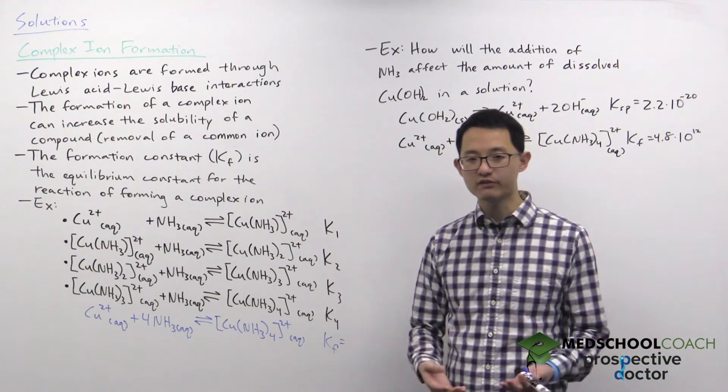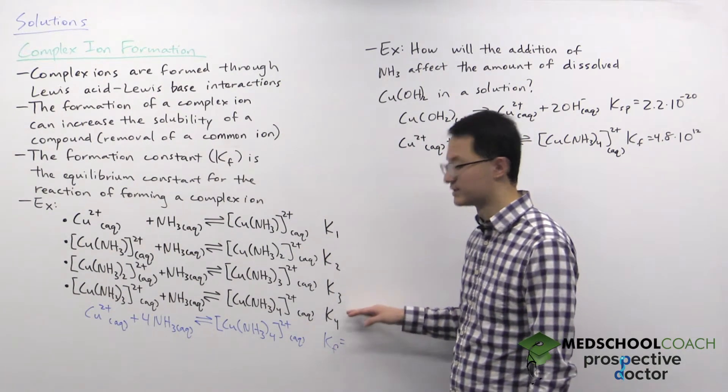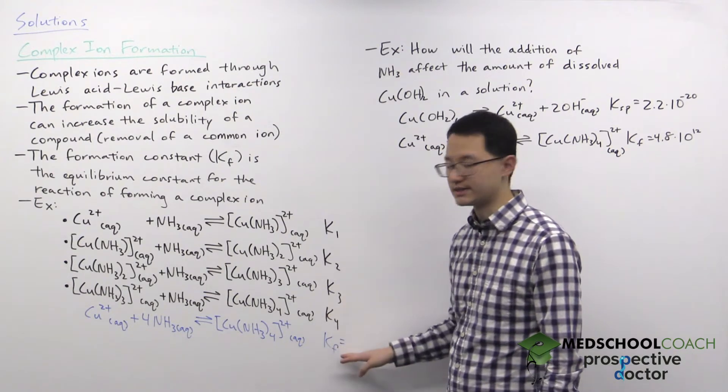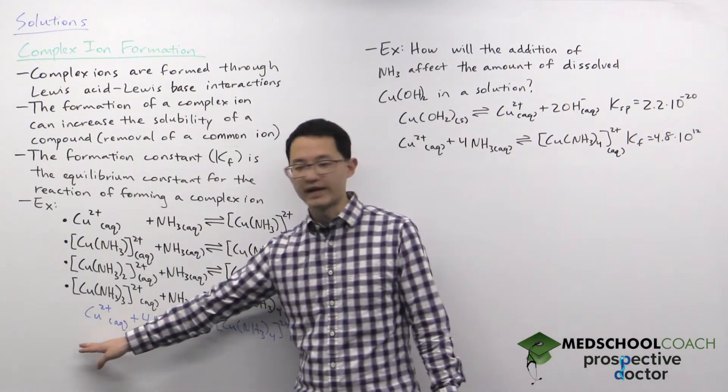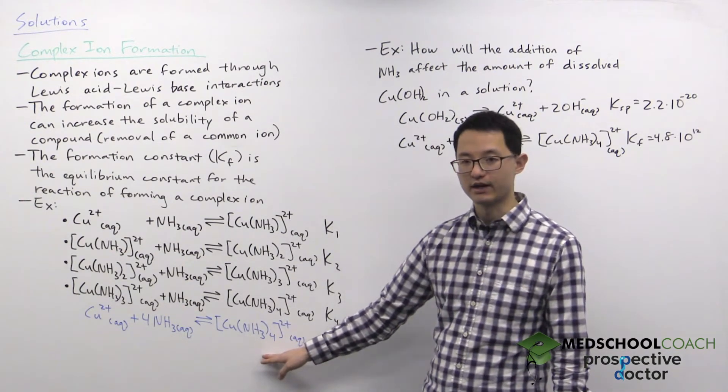Now often in terms of equilibrium we're not interested in the equilibrium constants of these individual steps but we're interested in the formation constant which is really the overall reaction of copper plus four ammonia molecules forming the complex ion.